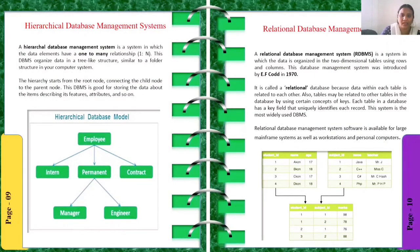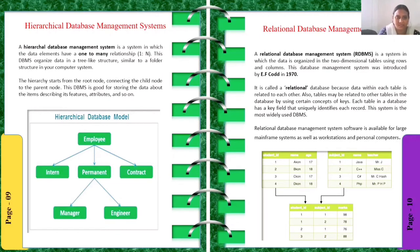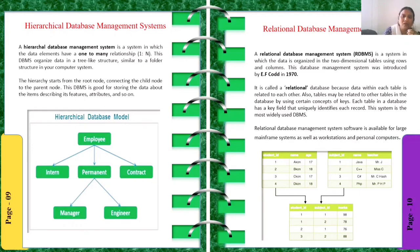The first one is the hierarchical database management system. Depending on your organization, you select which type of model is required. In the hierarchical DBMS, data elements have a one-to-many relationship. This DBMS organizes data like a tree structure, similar to the folder structure in your computer. The hierarchy starts from the root node, connecting child nodes to parent nodes. This DBMS is good for storing data about items and describing their attributes.